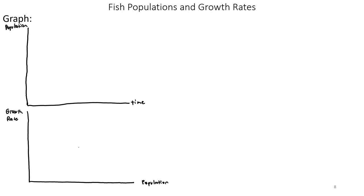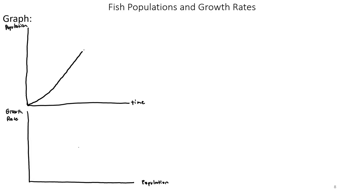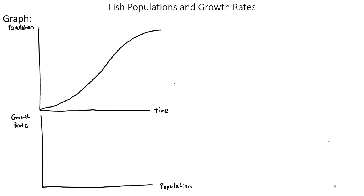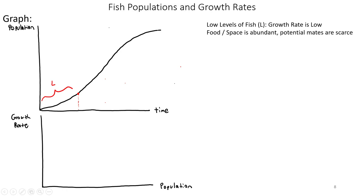As these fish start to grow, you'll start with very low levels of fish that will increase, then the growth rate gets much higher, and eventually starts to temper out. At a low level of fish, there's plenty of space and food available, but not a lot of potential mates — so you're going to have a relatively low growth rate. At a medium level of fish, shown in blue, you get the highest growth rates because there's still plenty of food and space, plus plenty of potential mates to reproduce.